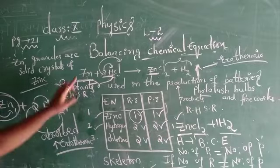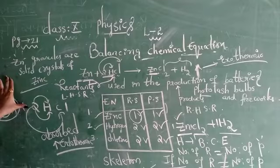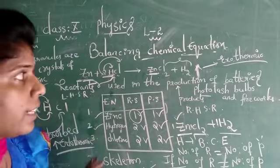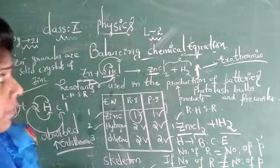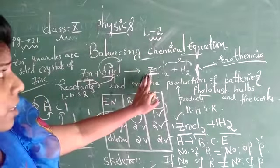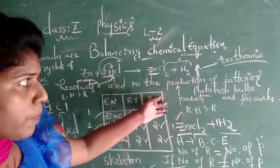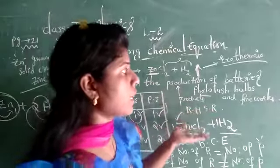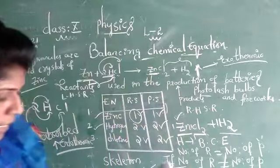Zinc granules are solid crystals of zinc, whereas hydrochloric acid is a colorless solution. This hydrochloric acid is used in the production of batteries, photoflash bulbs, and also other fibres.